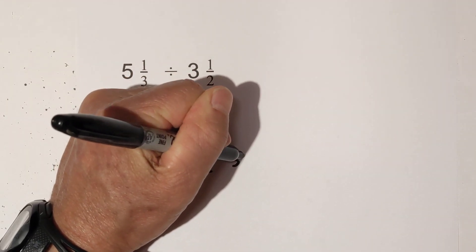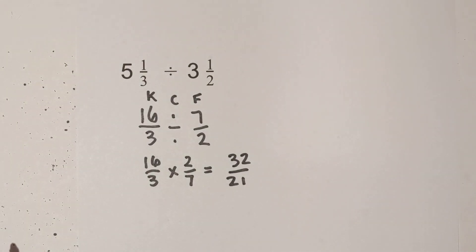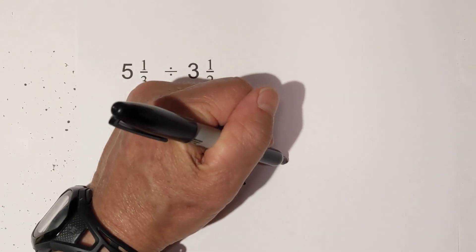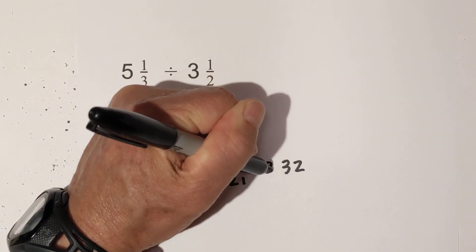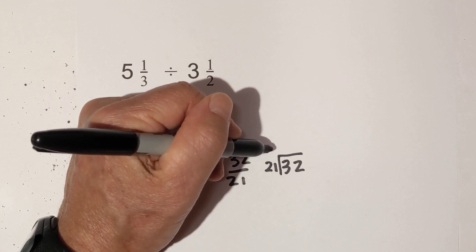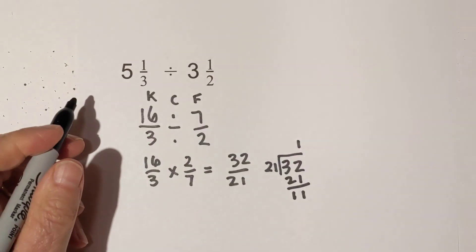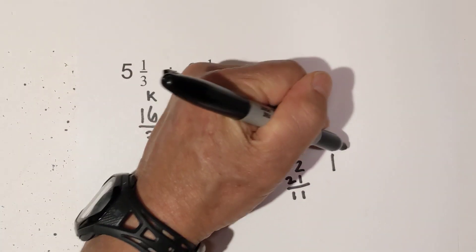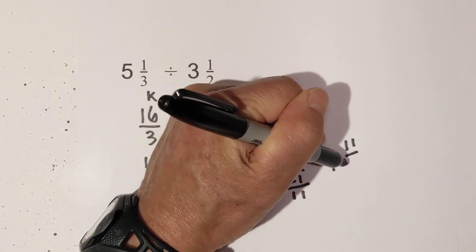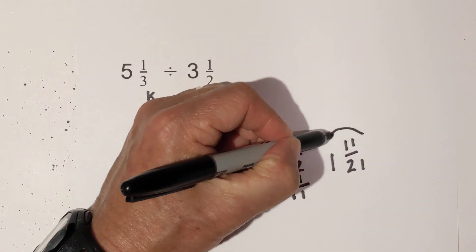Seven times three is twenty-one. Now convert back to a mixed number: thirty-two divided by twenty-one. Twenty-one goes into thirty-two one time, with eleven left over — so it becomes one and eleven twenty-firsts. Eleven is a prime number, so it is fully simplified.